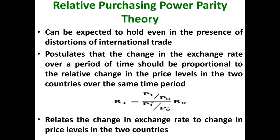If we let the subscript zero refer to the base period and one to the subsequent period, the relative purchasing power parity theory states that R1 equals R0 multiplied by (P1 divided by P0) divided by (P1-star divided by P0-star). Here R0 is the base period exchange rate, R1 is the subsequent period exchange rate, P1 by P0 represents the relative change in the price level in the home country, and P1-star by P0-star represents the relative change in the price level in the foreign country.